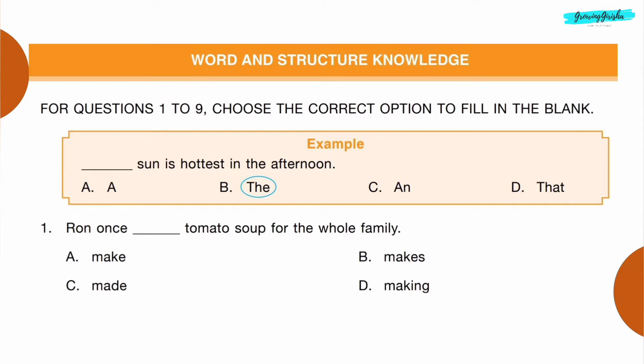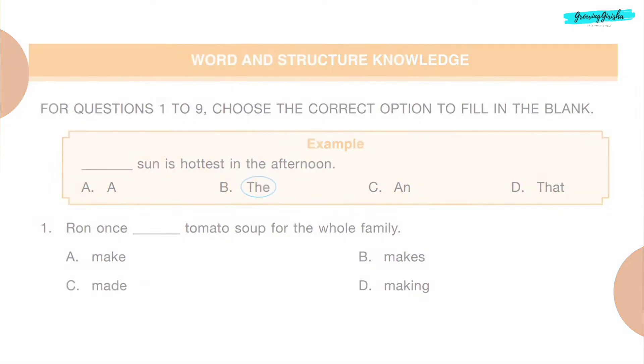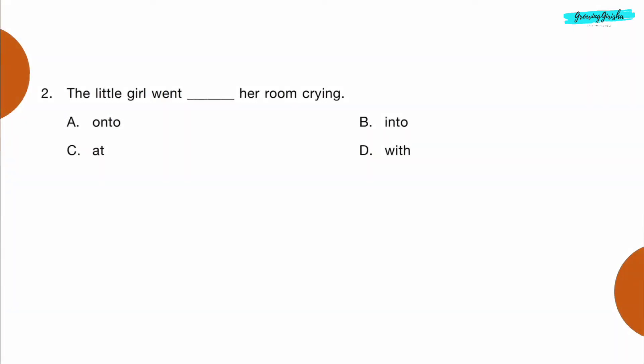Question 1: Ron wants dash tomato soup for the whole family. Option C: made. Question 2: The little girl went dash her room crying. Option B: into.